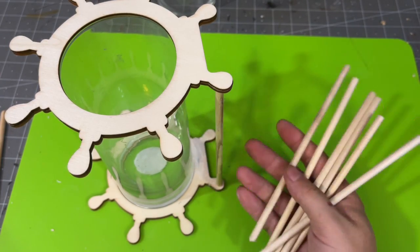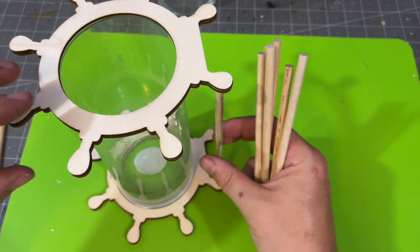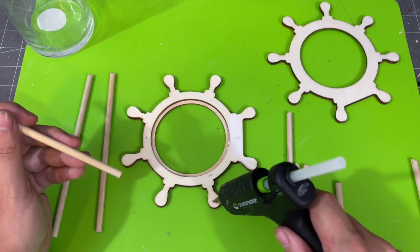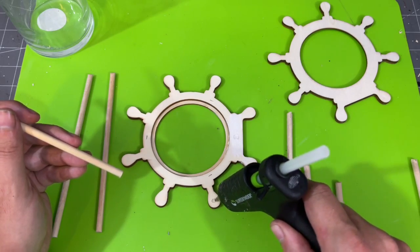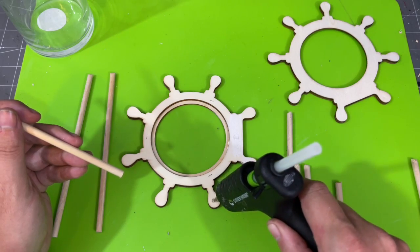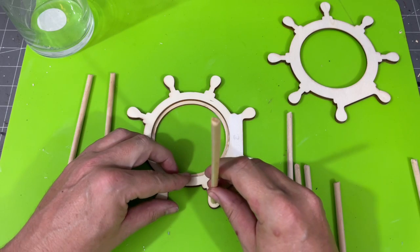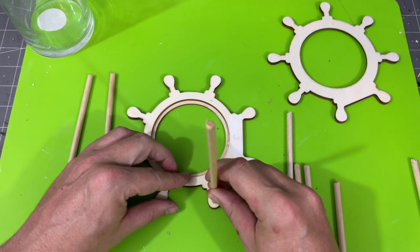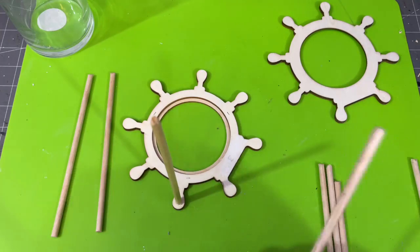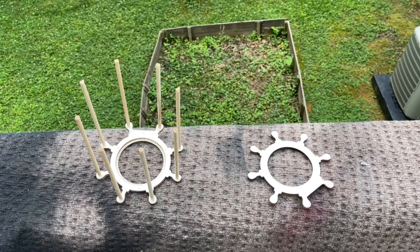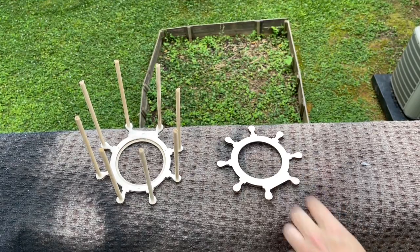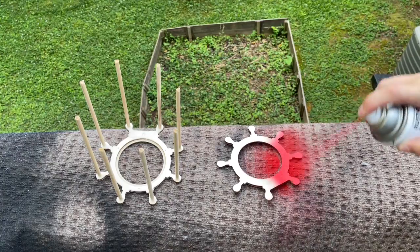Once you've got all eight of those cut you can start to glue them on the lower part or on one half of your nautical frame. Just do it on the lower half or on one of the halves and you'll see why we're doing that in just a second. After you've got your pieces kind of glued together and set up like this you're going to take them outside and spray paint them.